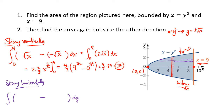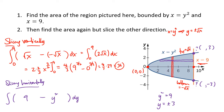In this case, the integral is easier to set up because the right function is x equals 9 and the left function is x equals y squared. The challenge is finding the bounds — the lower and upper y values that begin and end this region, i.e., the intersection points. Setting y squared equal to 9 gives y equals plus or minus 3, so the integral goes from negative 3 to positive 3.